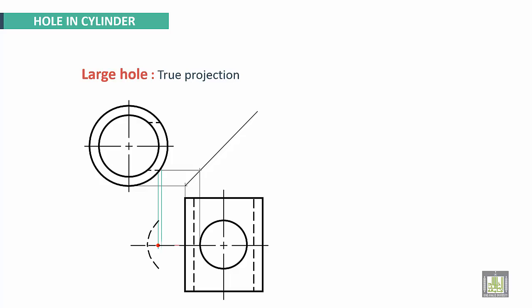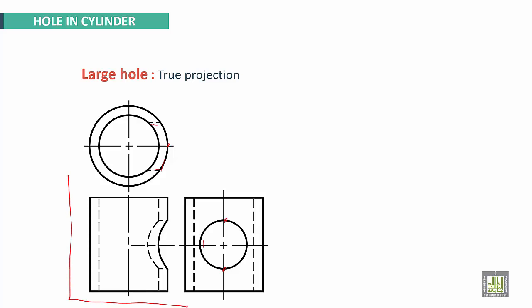After that we'll continue with the external intersection between this hole and cylinder. This point on the axis will be projected here. We have two points and finally this is the arc.